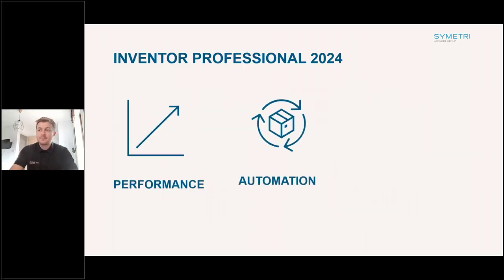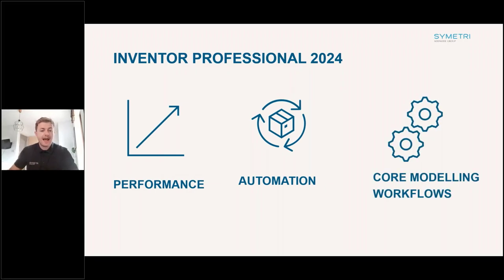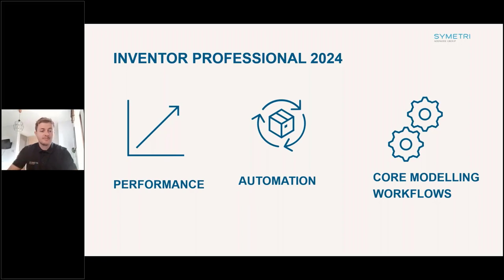Let's get started with Inventor Professional. With every release, Autodesk tend to look at three key focus areas. One of the main ones is performance — making sure the software is updated with the latest specs, runs as smoothly as possible, and getting rid of any bugs from previous releases. They've also focused on automation, stopping manually laborious tasks and automating procedures so day-to-day users aren't spending time on repetitive tasks. And also core modeling workflows.